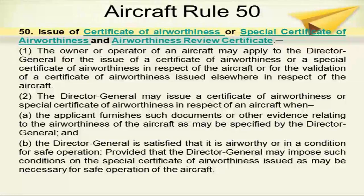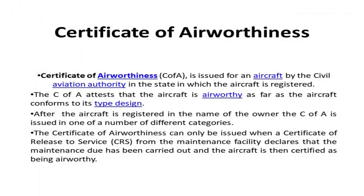We are on Aircraft Rule 50, which is for the issue of certificate of airworthiness, special certificate of airworthiness, and airworthiness review certificate. A certificate of airworthiness is issued for an aircraft by the civil aviation authority in the state in which the aircraft is registered. It attests that the aircraft is airworthy as far as the aircraft conforms to its type design. After the aircraft is registered in the name of the owner, the CoA is issued in one of a number of different categories.